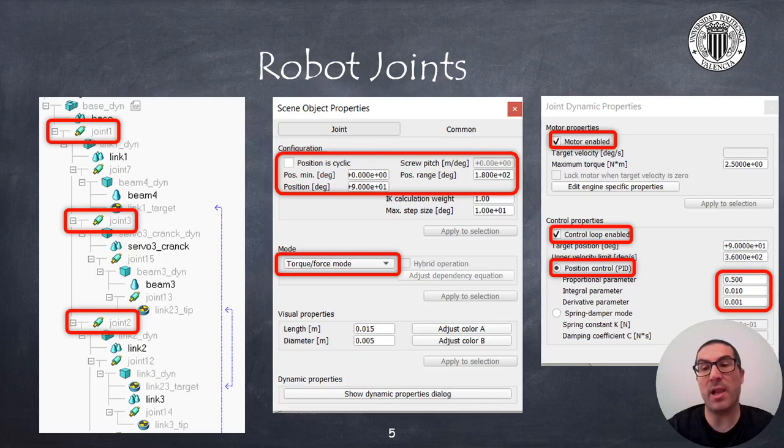In the figure on the left I have highlighted the three joints on which we must set the configuration, in particular joint 1, joint 2 and joint 3. The remainder of joints please leave them exactly as they are.